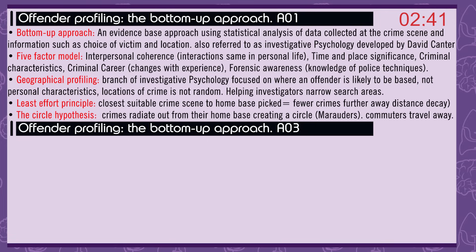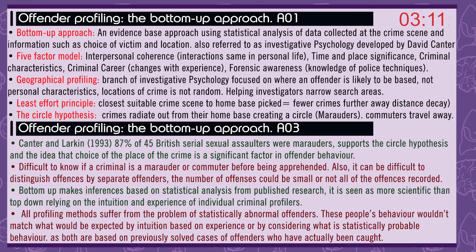Geographical profiling is a branch of investigative psychology focused on where an offender is likely to be based, not on personal characteristics. It assumes the location of crime is not random and helps investigators narrow down search areas. The least effort principle: the closest suitable crime scene to the criminal's home base is picked, meaning fewer crimes further away — distance decay. The circle hypothesis: crimes radiate out from the home base, creating a circle. Marauders operate from the home base; commuters travel away from it. Canter and Larkin, 1993, found 87% of 45 British serial sexual assaulters were marauders, supporting the circle hypothesis.